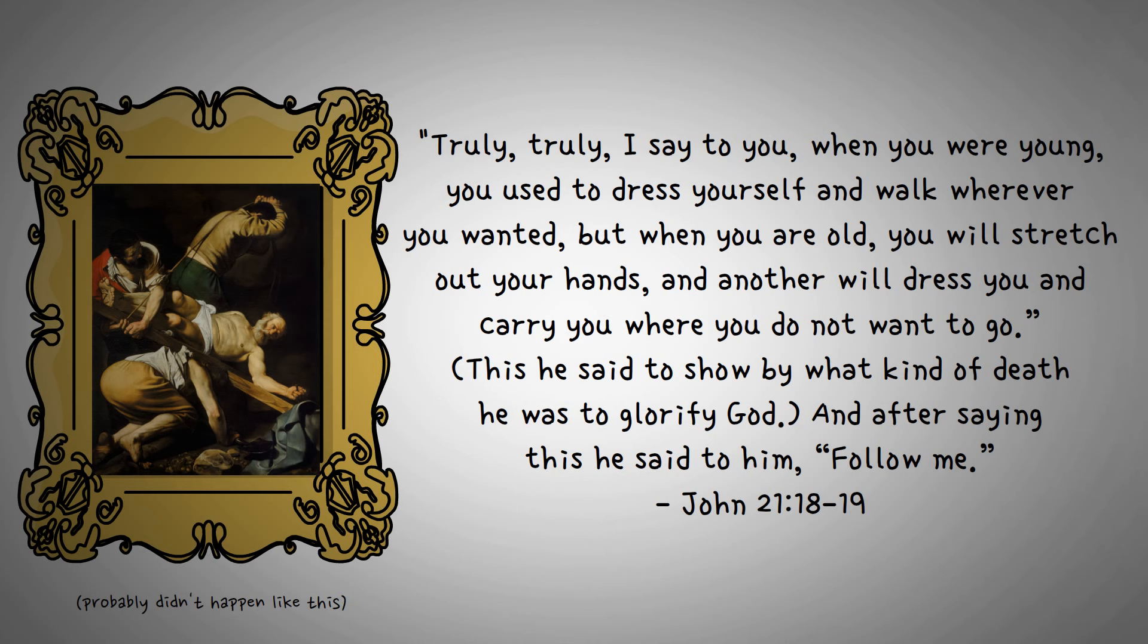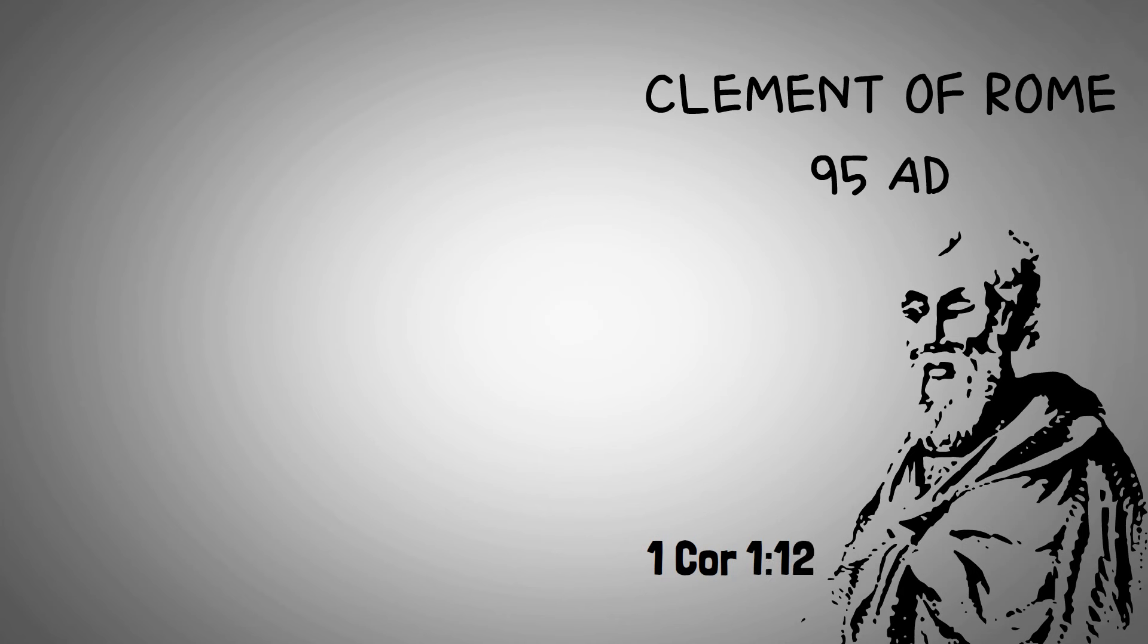So here Jesus predicts that Peter will die a martyr's death. Most scholars date John's gospel to the late first century, long after Peter died. Whether Jesus actually spoke these words or not isn't the issue here. I doubt John would have attributed this prophecy to Jesus if Peter's martyrdom actually didn't happen. Second, we have the letter of Clement of Rome, which tells us about the deaths of Peter and Paul. Irenaeus tells us that Clement knew some of the apostles, so he'd be in a good spot to know. Also, Clement wrote to the Church of Corinth, which had a history with both apostles.